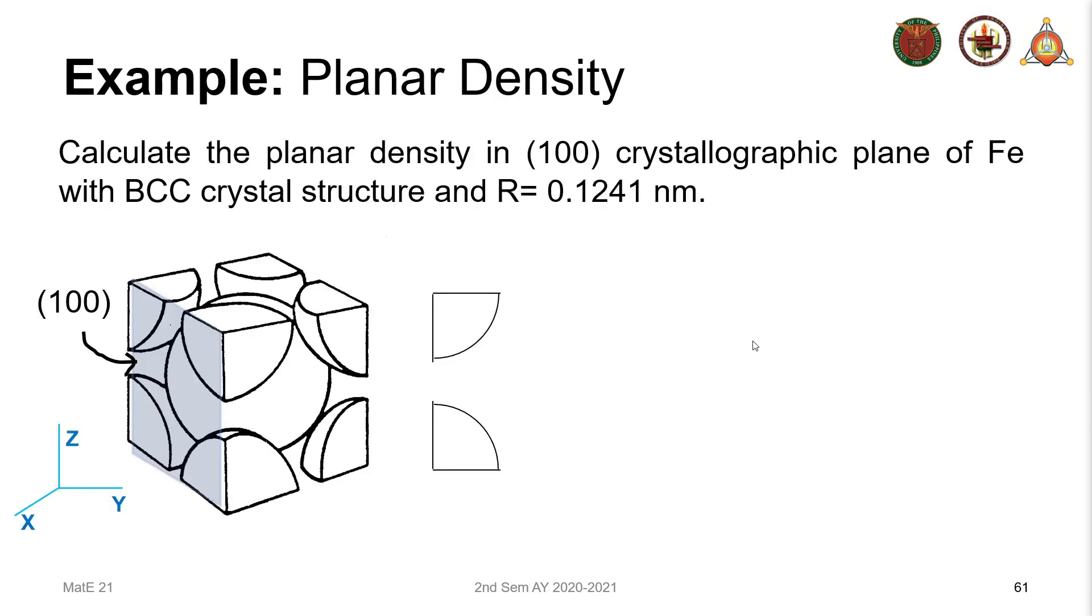So for example, let's calculate for the planar density in the (100) crystallographic plane of iron with a BCC crystal structure, and the radius of an iron atom in the structure is 0.1241 nanometers. So the (100) plane is this one here, it's this plane here.